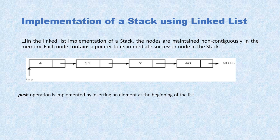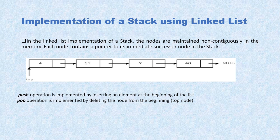Keep in mind that insertion and deletion always happen from the top. The push operation is implemented by inserting an element at the beginning of the list. The pop operation is implemented by deleting the node from the beginning or top. There is one more operation called peek, which always returns the data from the top item. That's the complete concept of how we implement a stack using a linked list.